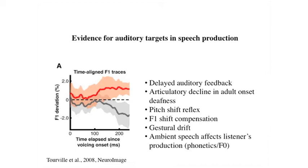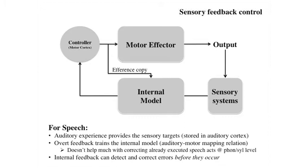There's lots of evidence that auditory information is critical for speech production. For example, a bad phone line with an echo makes it very difficult to talk — the echo interferes with speech production. Research on pitch-shift reflexes and F1-shift compensation provides additional evidence. People who go deaf late in life find their articulatory system declines over time — they need auditory feedback to keep the system tuned. To summarize: auditory experience provides sensory targets, overt feedback trains the internal model, and through practice you learn what movements will produce the right auditory consequence.